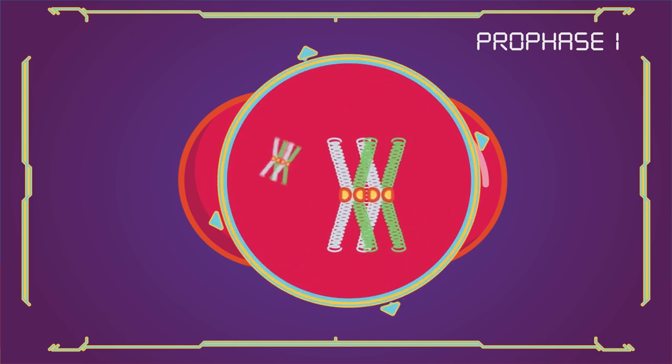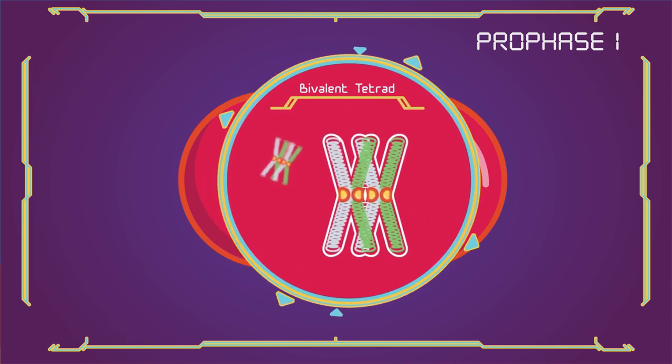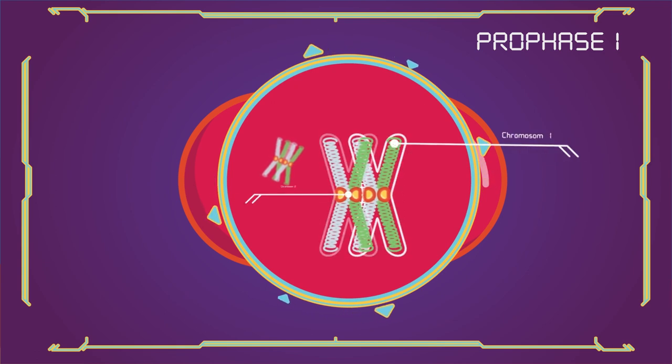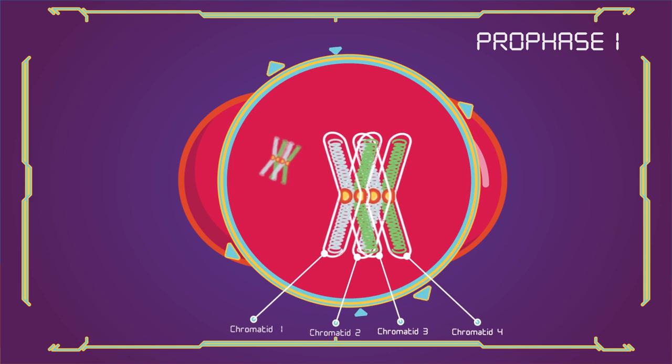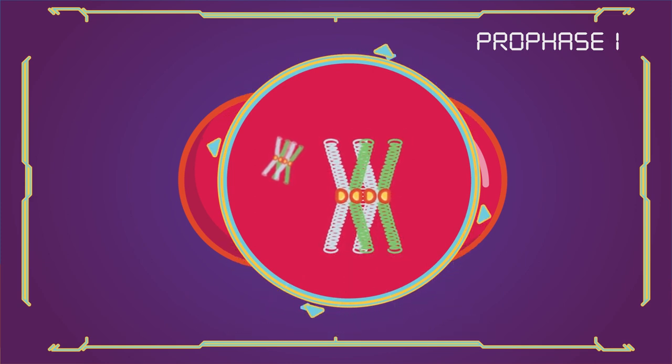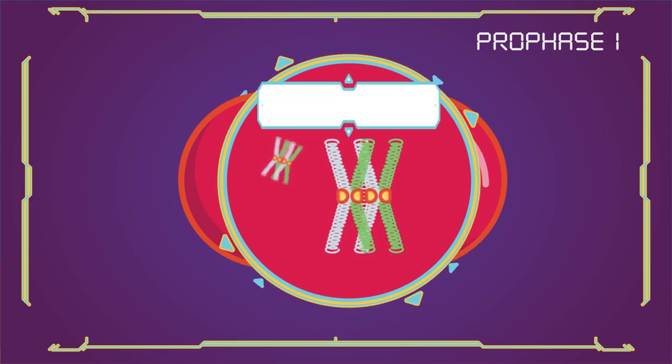The paired and replicated chromosomes are called bivalents or tetrads, which have two chromosomes and four chromatids. With one chromosome coming from each parent, the process of pairing the homologous chromosomes is called synapsis.